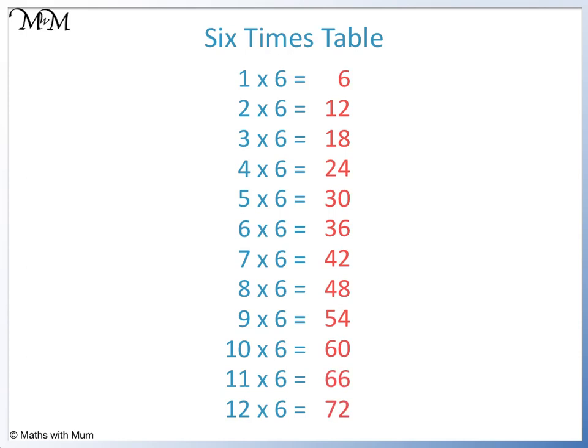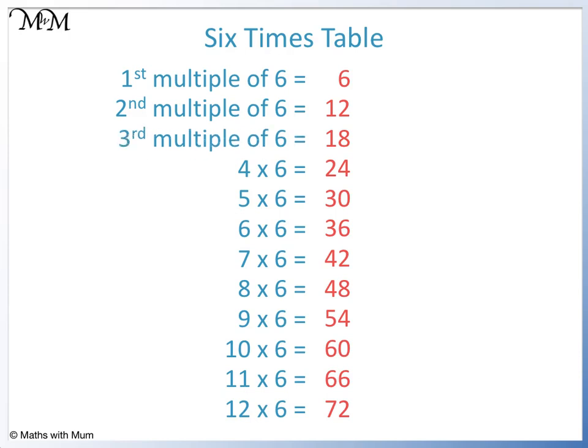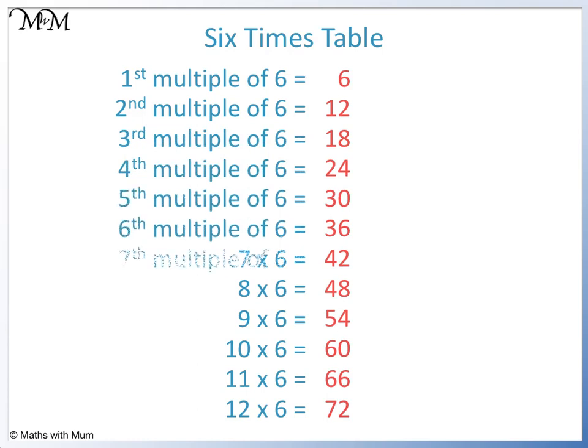The first multiple of 6 is 6 because 1 times 6 equals 6. The second multiple of 6 is 12 because 2 times 6 equals 12. The third number in the 6 times table is 18, so 18 is the third multiple of 6, and so on.